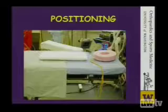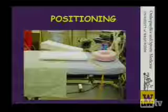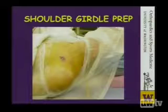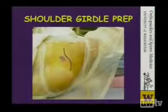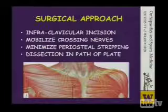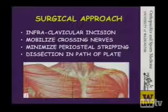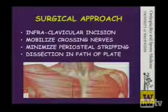Briefly about operative fixation: we've moved away from the beach chair position to the supine position, using an interscapular roll to allow the clavicle to become more prominent. We prep either the entire shoulder girdle or just the clavicle depending on what we're anticipating intraoperatively. The whole prep allows us to see the entire axis, and we always ensure the C-arm will allow good visualization on the AP and the 45-degree cephalic tilt X-ray.